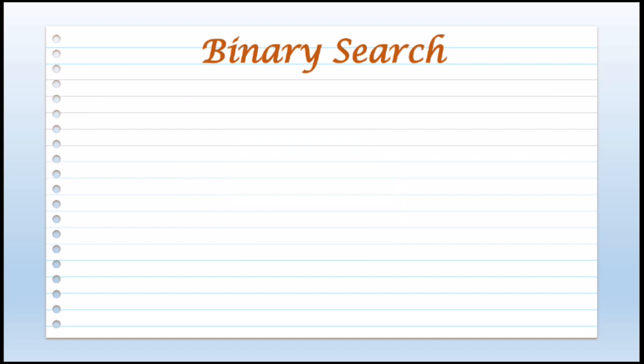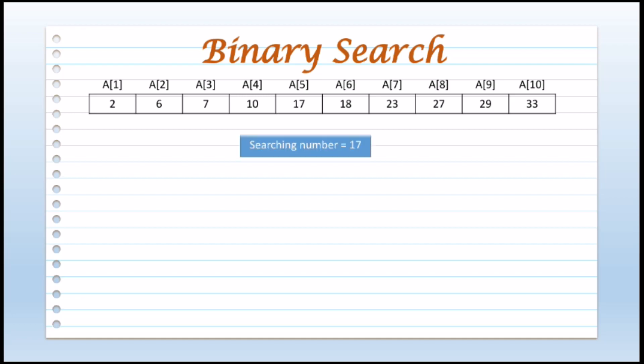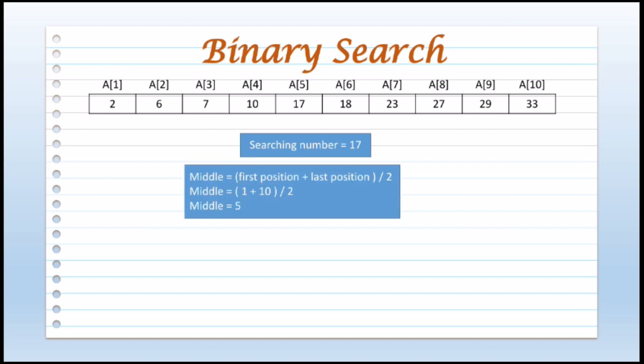Now we will take another example. These are the numbers and suppose we try to find the searching number that is 17. First we will find the middle position: first position is 1 and the last is 10, so 1 plus 10 is 11 and 11 divided by 2 is 5. On the middle position, the value which is stored is 17. We compare that value with the searching number: 17 is equal to 17, which means the value is present in the list and it is at the 5th position.